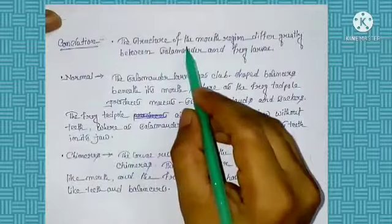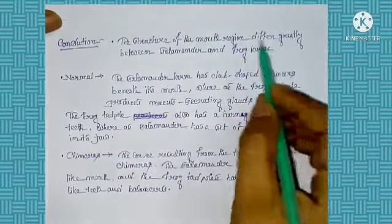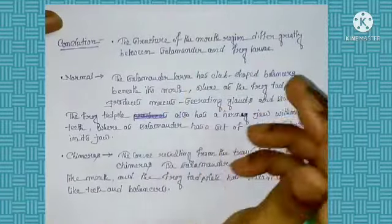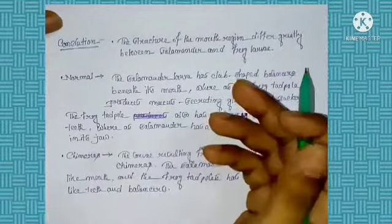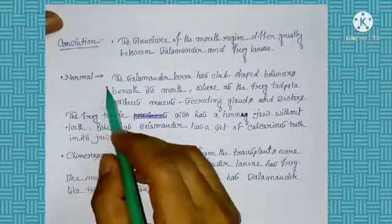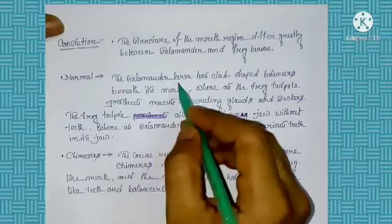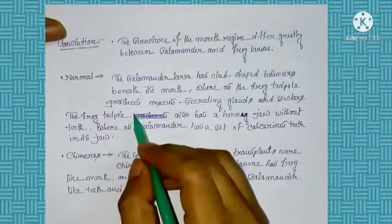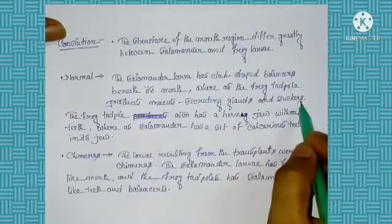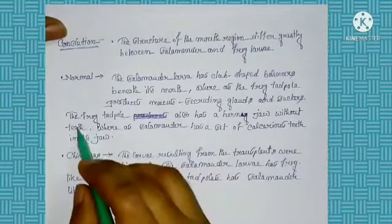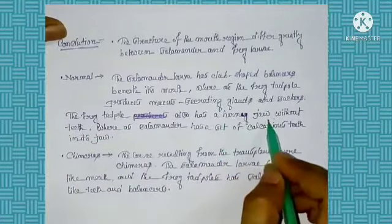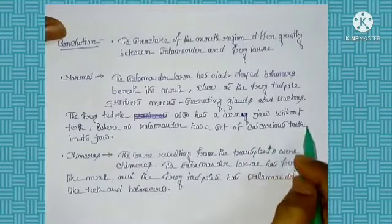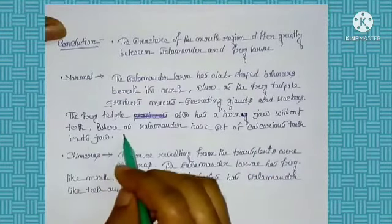Conclusion: the structure of the mouth region differs greatly between the salamander and the frog larva. As the salamander and the frog are different species, their mouth structure is also different. Normally, the salamander larva has club-shaped balancers beneath the mouth, whereas the frog tadpole produces mucus-secreting glands and a sucker. The frog tadpole also has a horny jaw without teeth, whereas the salamander has a set of calcareous teeth in the jawline.